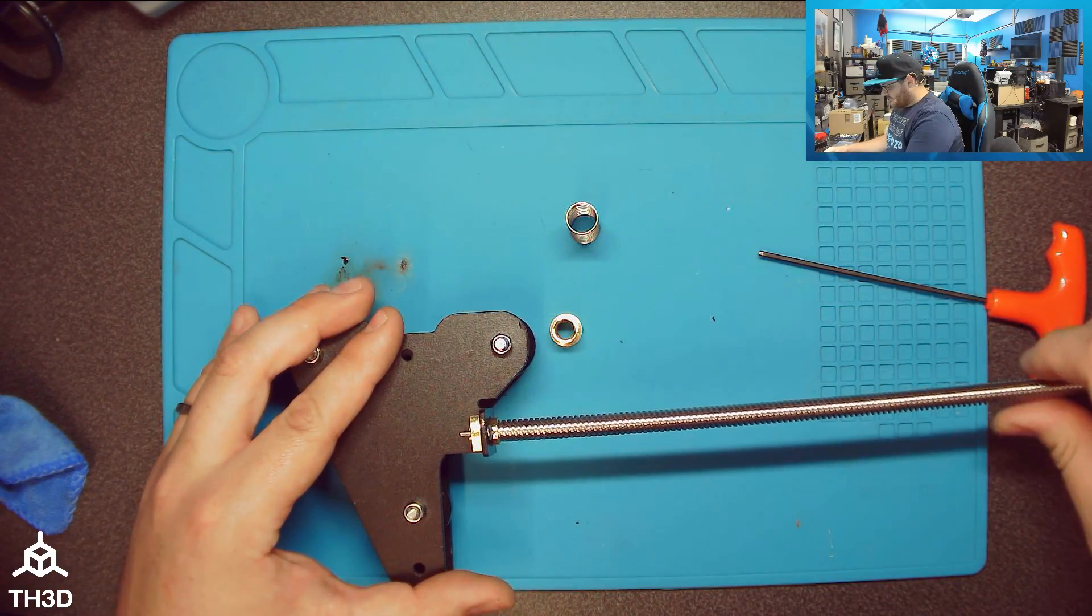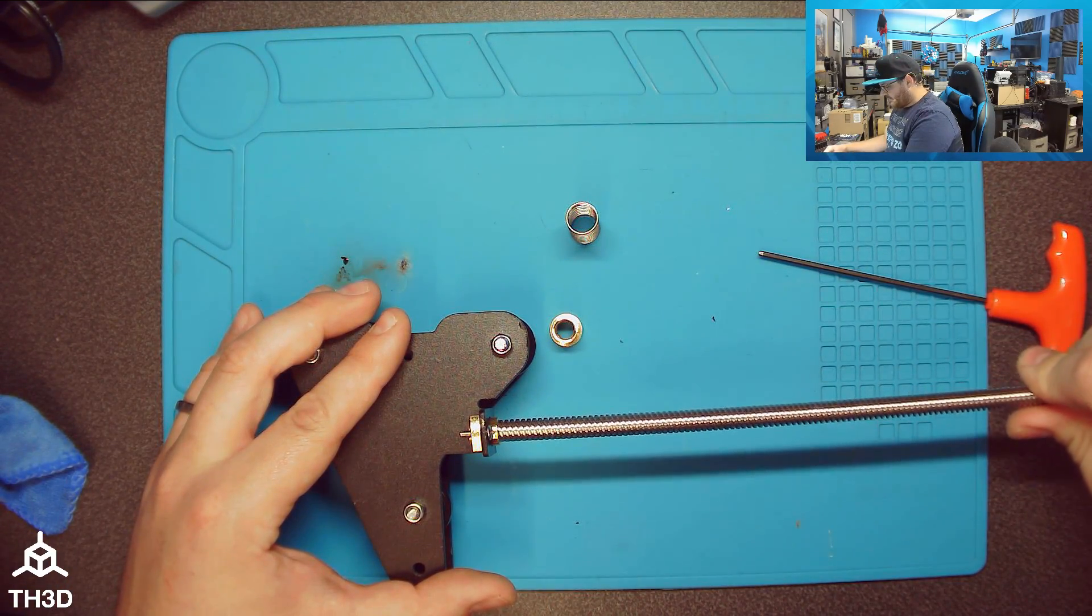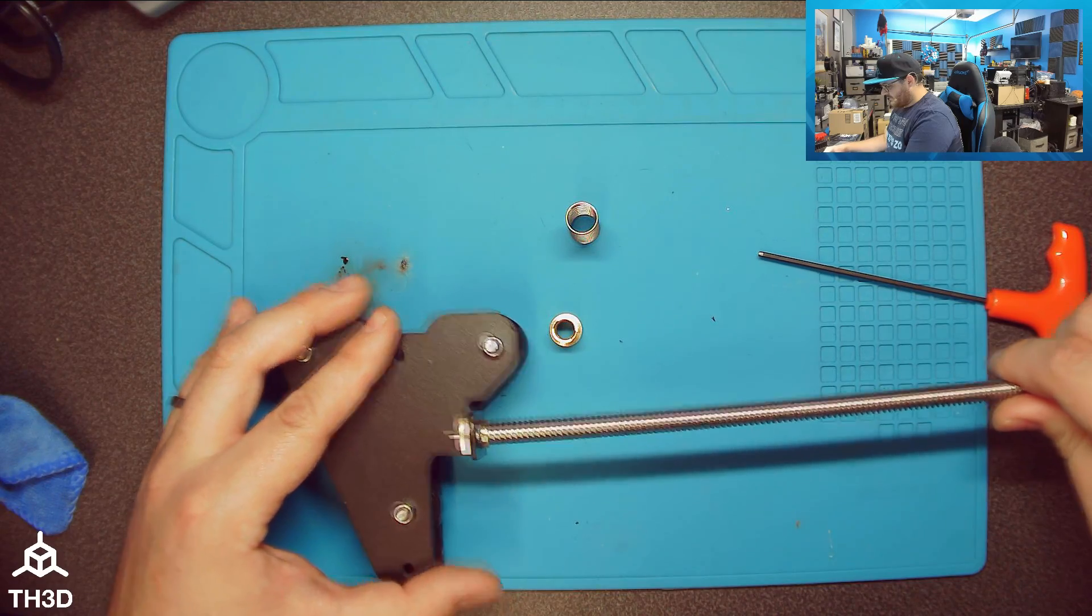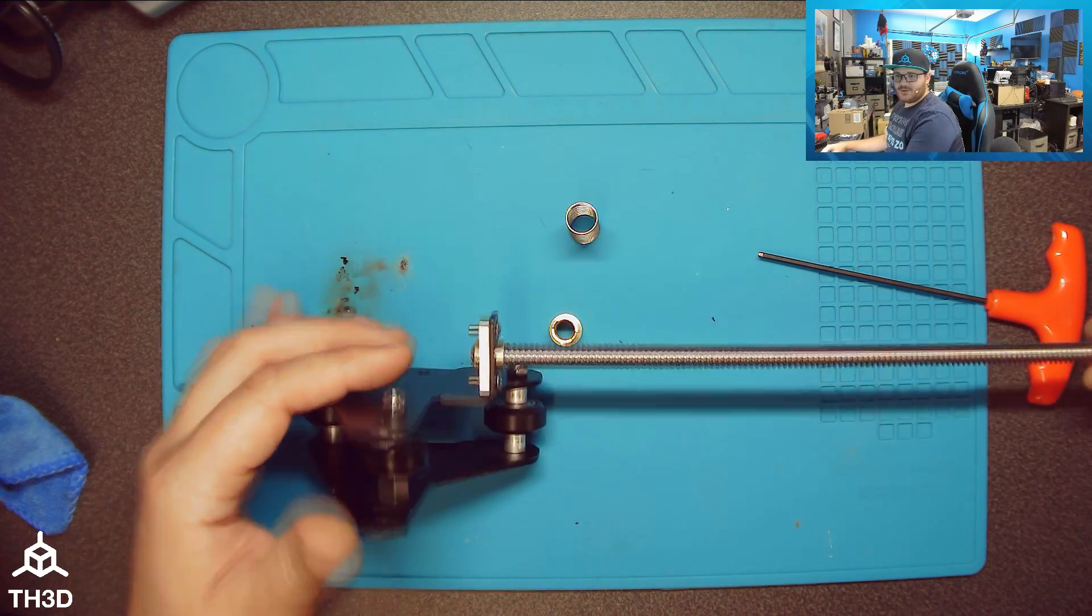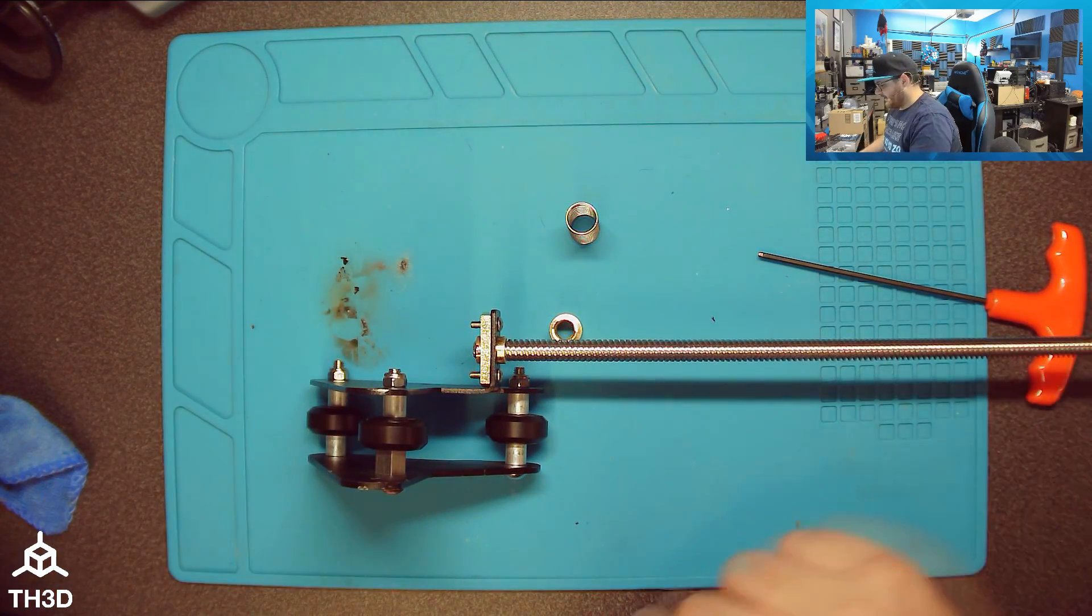Now we're almost done. All we have to do is put our lead screw in the top of the nut here. It might take you a second to get it in just like it did here. And we're going to want to have it so just a little bit of the bottom of this is sticking out.